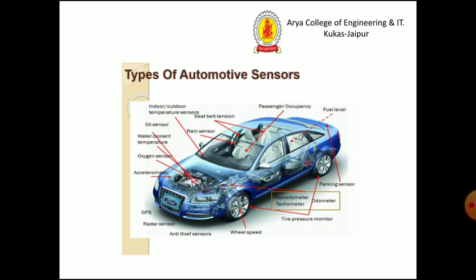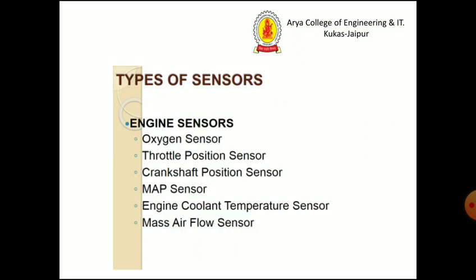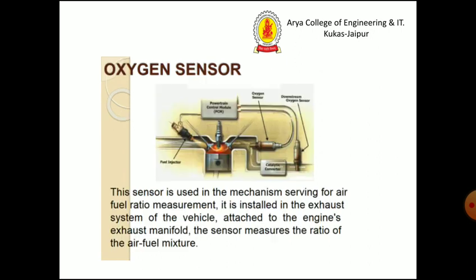There are many types of sensors also used in the vehicles. There are engine sensors like oxygen, throttle position, crankshaft position, MAP sensor, engine coolant temperature, and mass air flow sensors. The oxygen sensor is used in the mechanism, serving for air fuel ratio measurement. It is installed in the exhaust system of the vehicle, attached to the engine exhaust manifold. The sensor measures the ratio of the air fuel mixture.